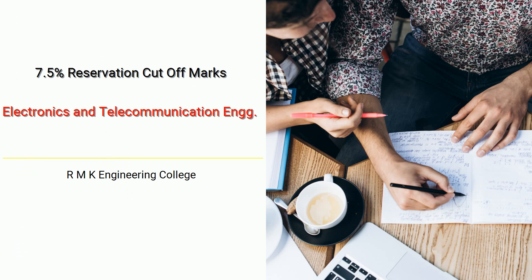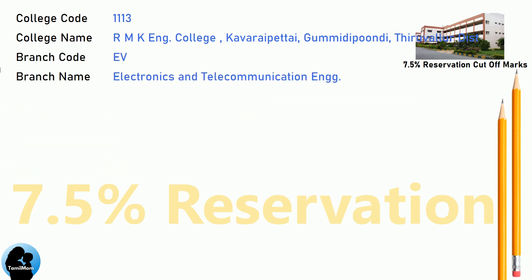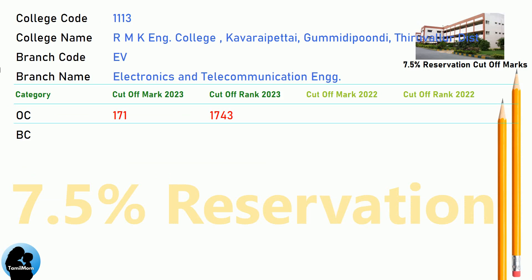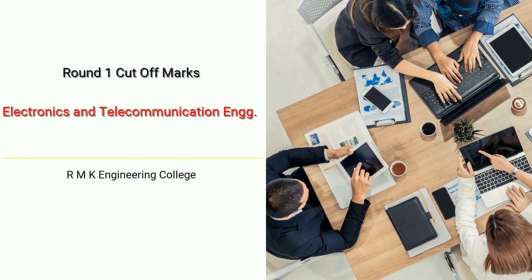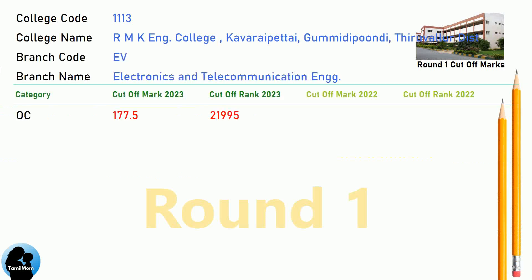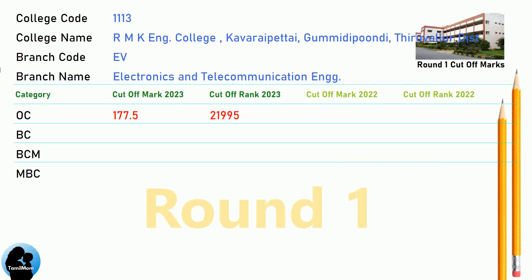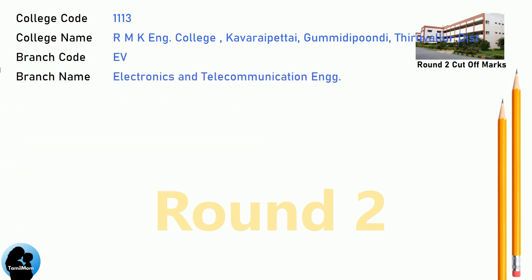DNA 7.5 Reservation Cut-Off, DNA Round 1 Cut-Off, and DNA Round 2 Cut-Off for RMK Engineering College in Electronics and Telecommunication Engineering.